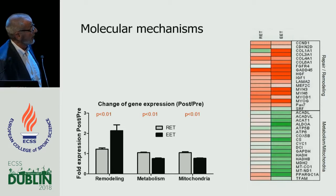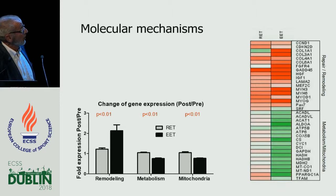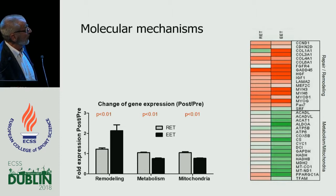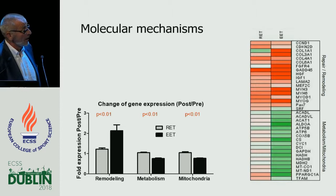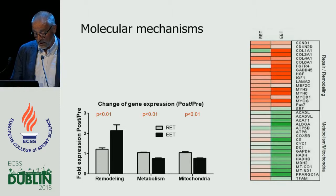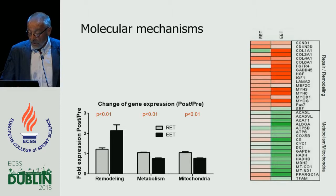Regarding molecular mechanisms, we find similar results to those found more recently in COPD patients. Gene expression of genes related to remodeling of interstitial tissue is increased, but genes related to oxidative metabolism and mitochondria are decreased. Mitochondrial density in muscles trained eccentrically is also decreased.